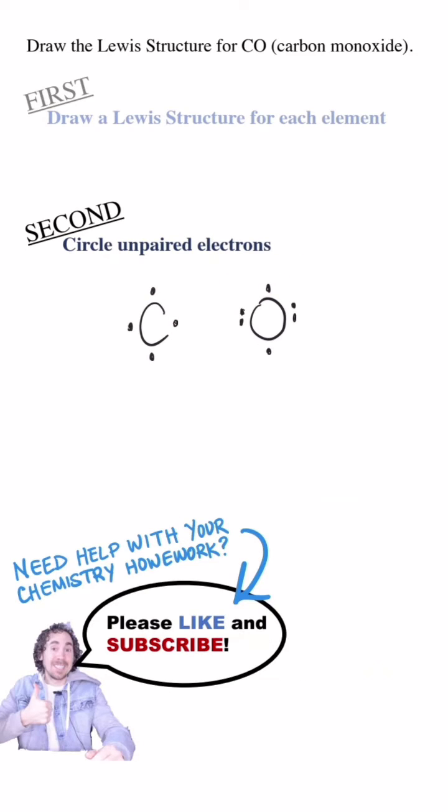Now I plan out how the bonds will form between the atoms by pairing unpaired electrons from the different atoms. Carbon and oxygen will share these electrons. There isn't really anything else oxygen wants from carbon.